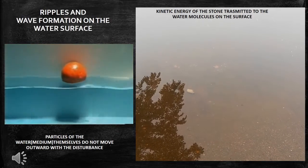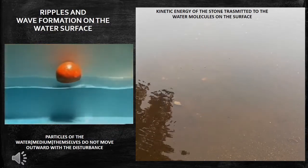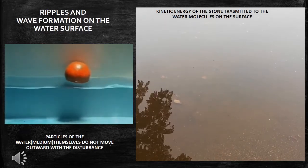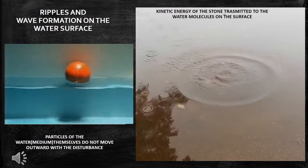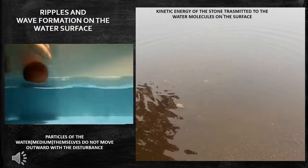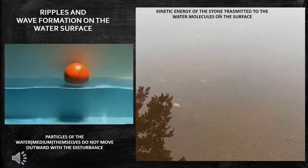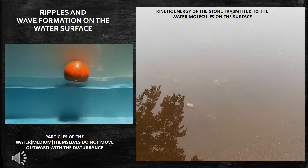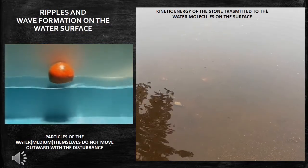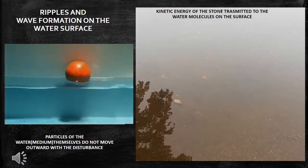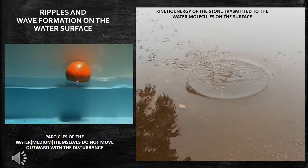Now we are going to see various examples of wave motion. First, we will see how waves are created on the surface of water. The waves created on the water surface are called ripples. When a stone is thrown on the surface of water, waves are created and travel along the water surface. The disturbance spreads out in the form of concentric circles of ever-increasing radii and strikes the boundary of the shore. This is because some of the kinetic energy of the stone is transmitted to the water molecules on the surface.